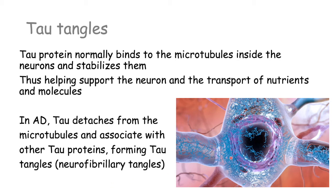We can see these here as squiggly blue lines — tau proteins essentially attaching to each other. Since they have detached from the microtubule, that microtubule will essentially fall apart. This will further impair the transmission of information in the brain, as you have impaired transport of neurotransmitters to the synaptic cleft, and this will also contribute to neuronal cell death.